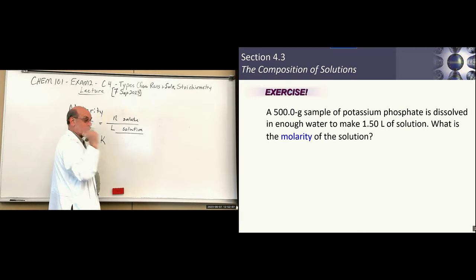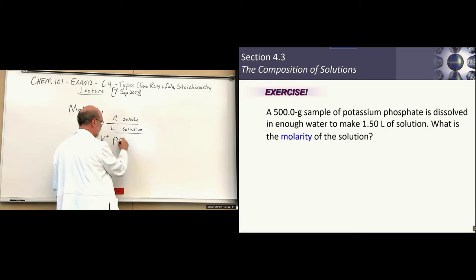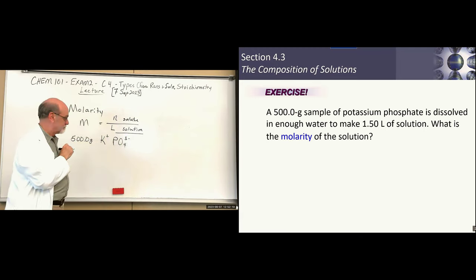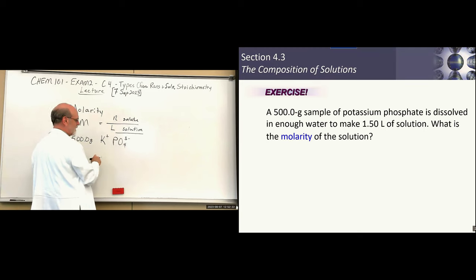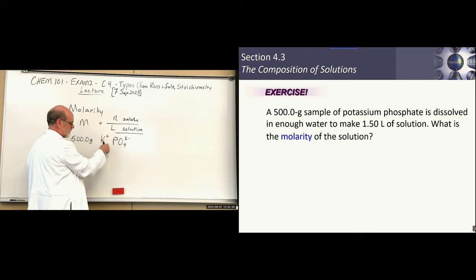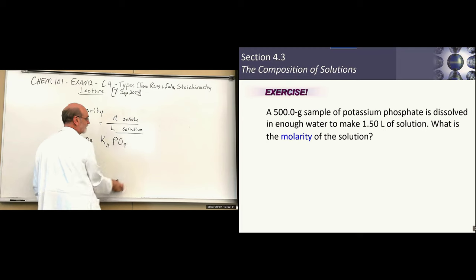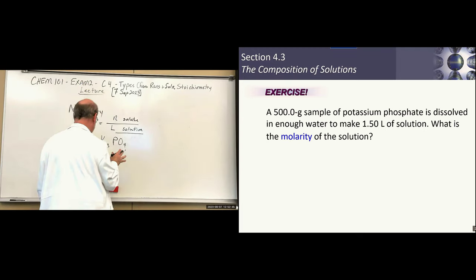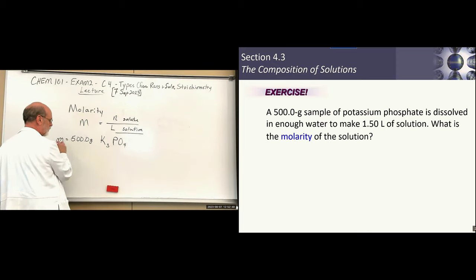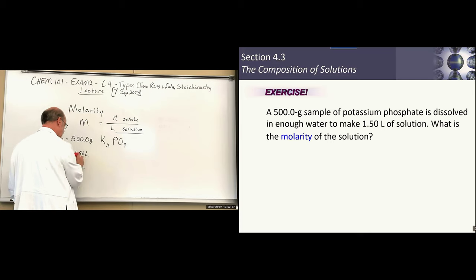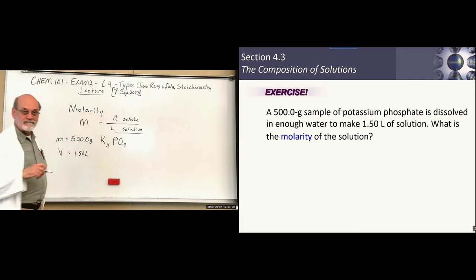We're going to put 500 grams of potassium phosphate in enough water to make a final volume of 1.50 liters. The question is: what's the molarity? We can calculate it, but the grams must first be converted to moles. Grams on the bottom, moles on the top — that's the molar mass. The molar mass of K₃PO₄ requires three potassiums at 39.10, one phosphorus at 30.97, and four oxygens at 16 each (64 total), giving a molar mass of 212.27 g/mol.